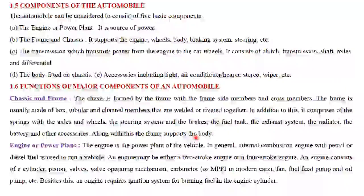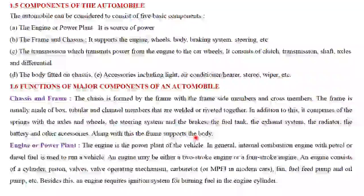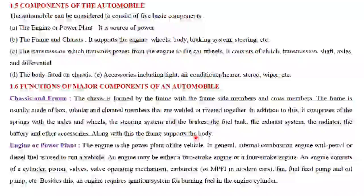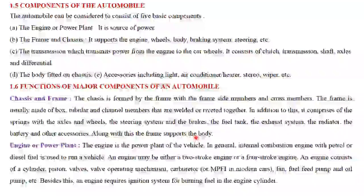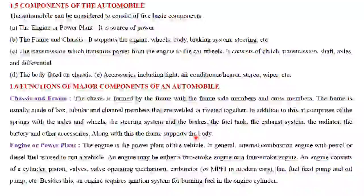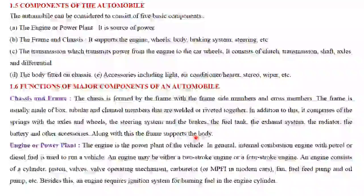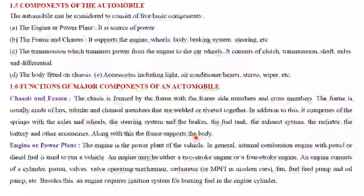In monocoque construction, screen pillars, door pillars, and the tunnel are essential load-bearing parts of the structure. This construction, like a shell structure, reduces weight and consequently saves fuel consumption. The crumple zones absorb the shock due to impact, providing safety for passengers. However, this reduces overall strength and durability. Popular cars are difficult to design with monocoque construction, and repair costs increase in the case of accidents. So there are advantages and disadvantages with monocoque construction.